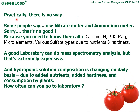Practically there is no way of finding it out. Some people say use a nitrate meter or ammonium meter, but that's no good, because you need to know all the nutrients present in the hydroponic solution at any point in time — the calcium, NPK, magnesium, microelements, and various types of sulfates due to the nutrients and the hardness. A good laboratory can do mass spectrometry analysis, but that's extremely expensive.